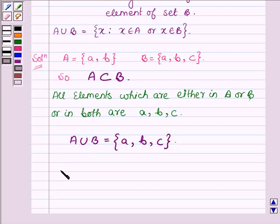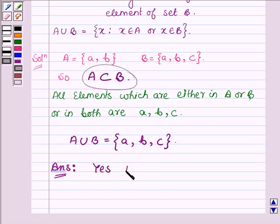So our answers are: First, we are asked whether A is a subset of B or no. So yes, A is a subset of B. And second, what is A union B? So A union B is the set of elements a, b and c.